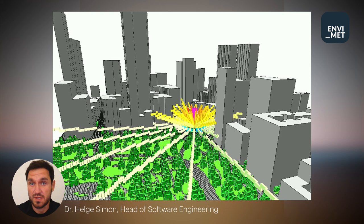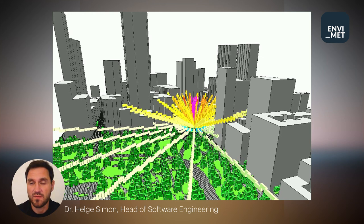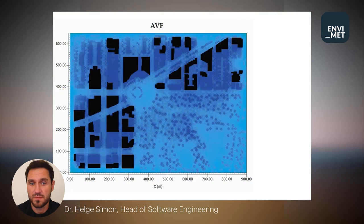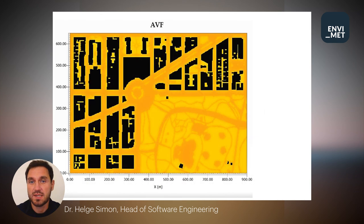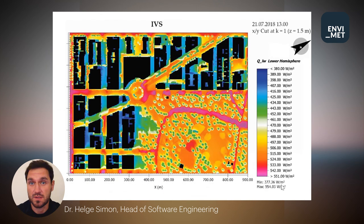Looking at the comparison with and without IVS, the immediate effects of secondary radiation on the environment become clearly visible. You can now see sun-facing facades reflect more short-wave radiation, and long-wave radiation is significantly higher above hot surfaces such as asphalt.